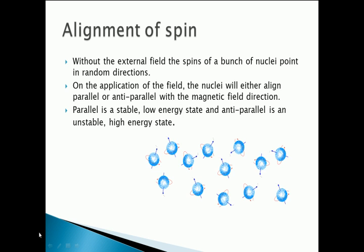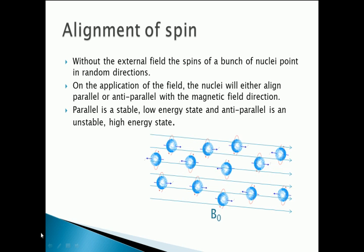That's just one proton. Looking at a whole collection of protons, we can see they have random spin directions to start with. When you apply the magnetic field, they align in the direction of the field. But if you look closely, some have aligned in the parallel direction and others in the anti-parallel direction — they've fallen into two energy states. The parallel state, where the spin vector points in the same direction as the magnetic field, is a low energy state. The anti-parallel direction, pointing opposite to the magnetic field, is a higher energy state. The parallel state is much more stable than the anti-parallel state.